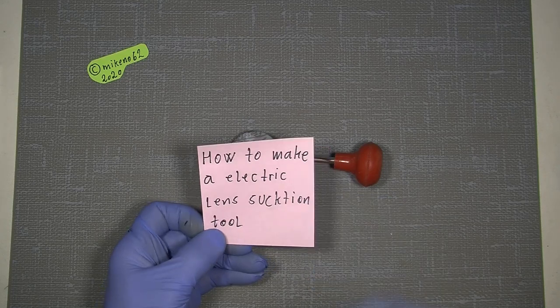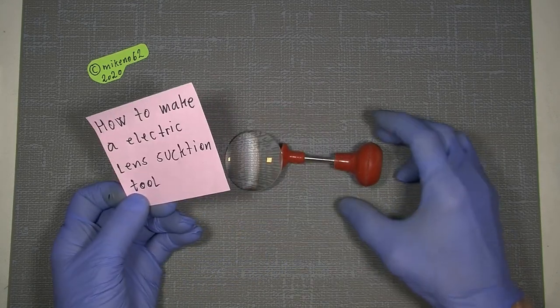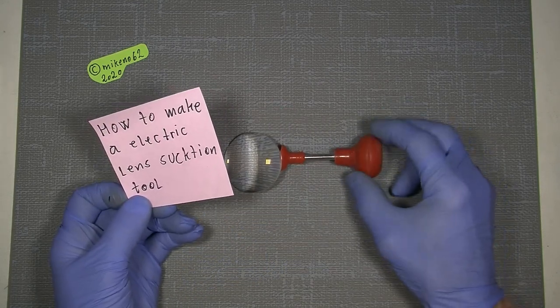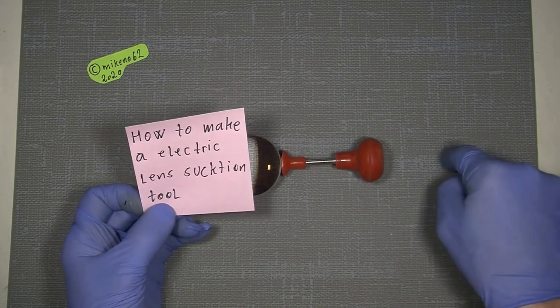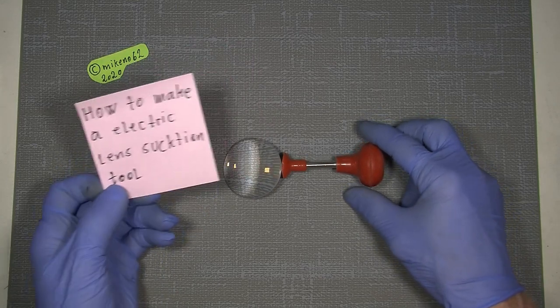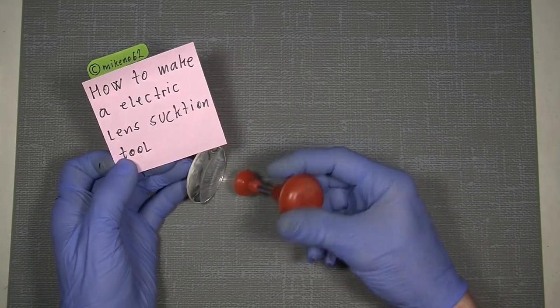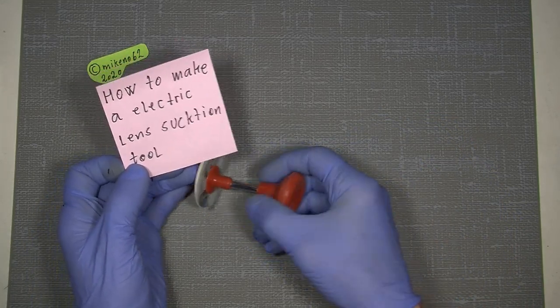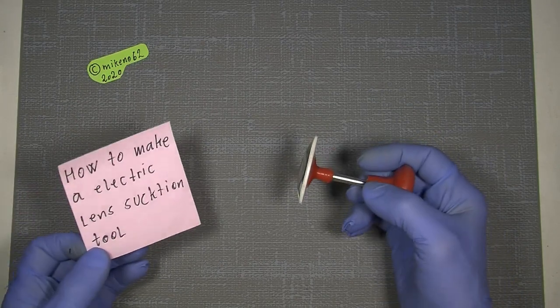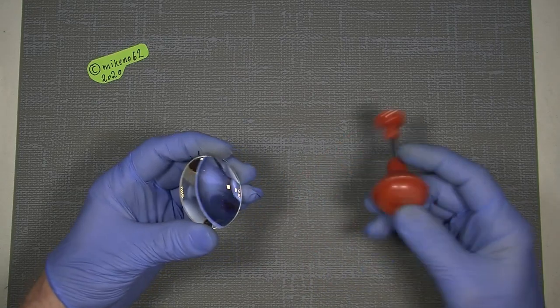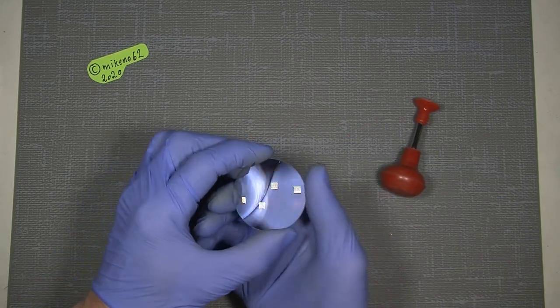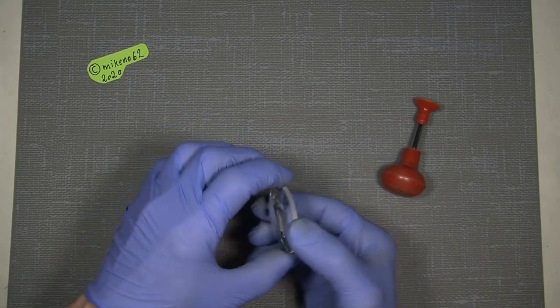But I have a long time thinking about if I could make this electric. As a push of a button, it could suck the lens. So it would be something like that. What I was thinking, having a kind of a vacuum pump or something.